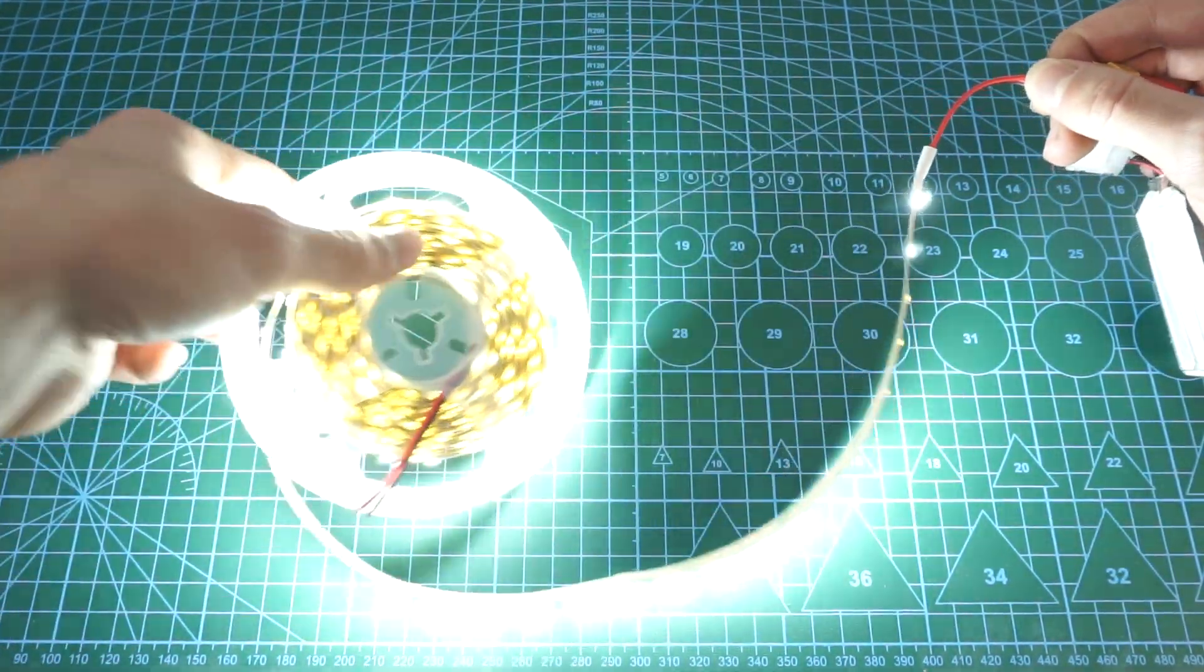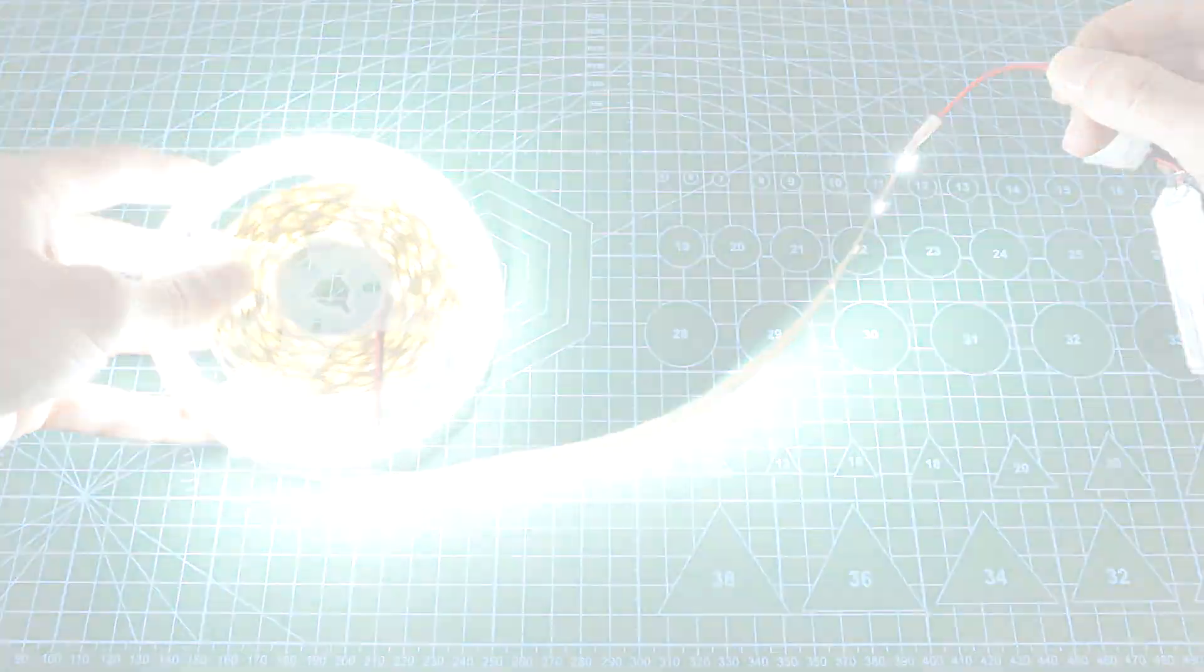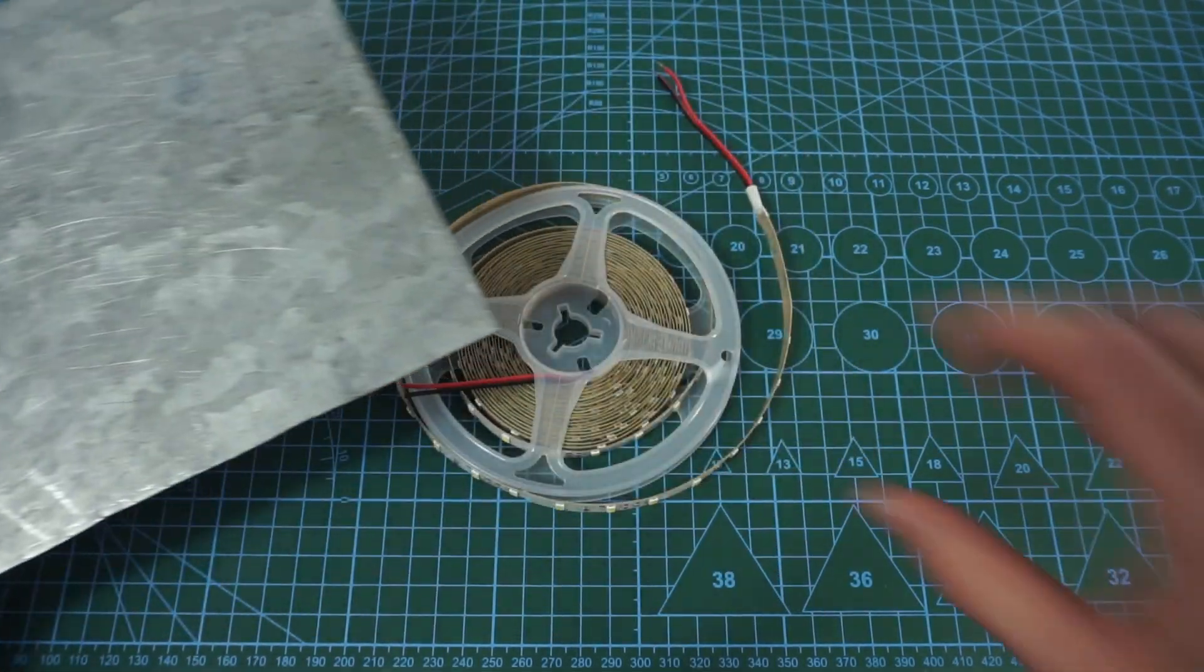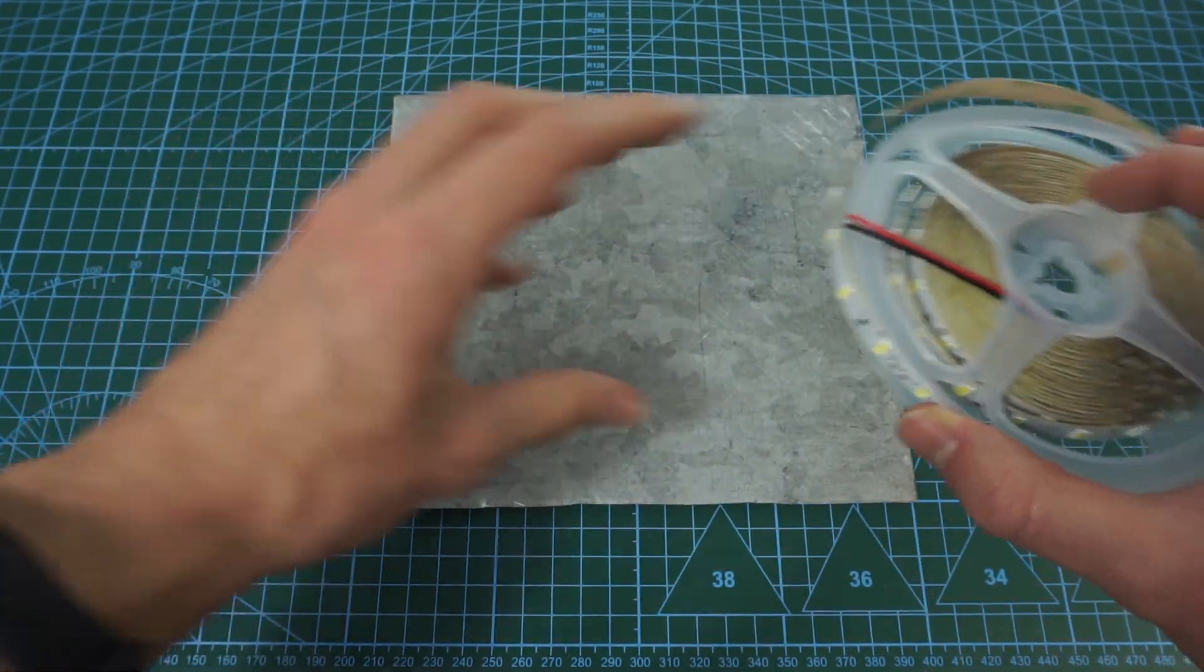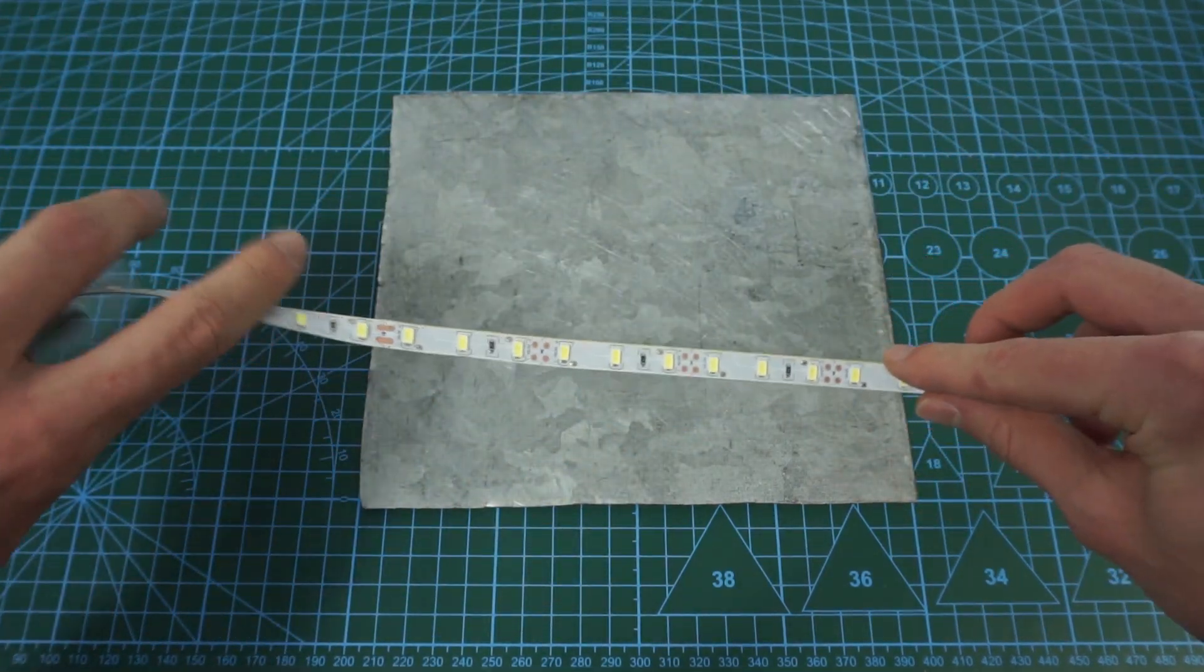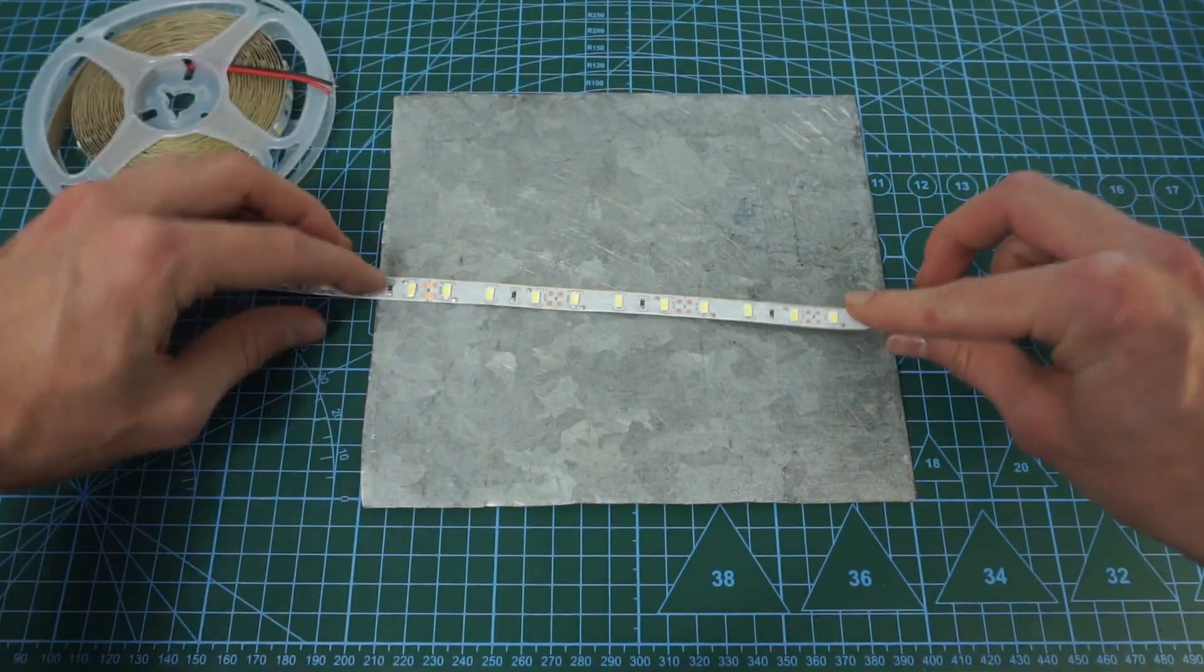So I searched my garage for some metal scraps and found a big steel sheet from which I cut this piece. Now if we stick the strips to the steel, it will help remove the excess heat and allow the LEDs to stay cooler.